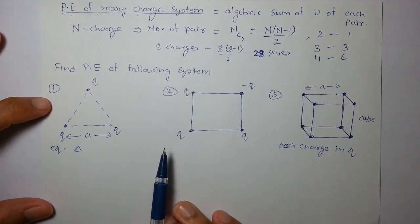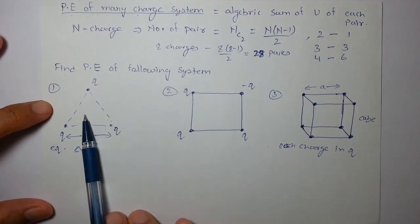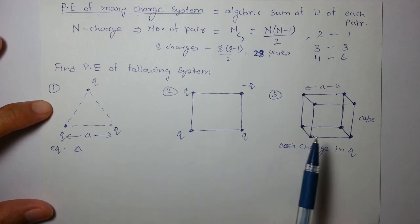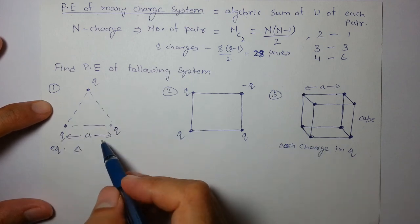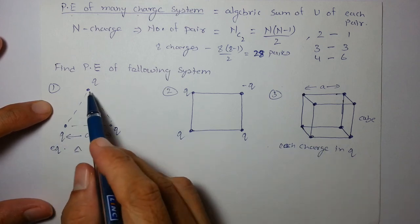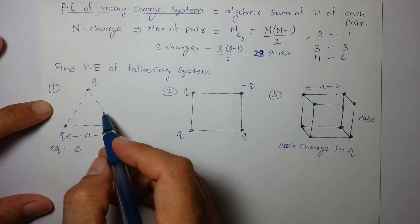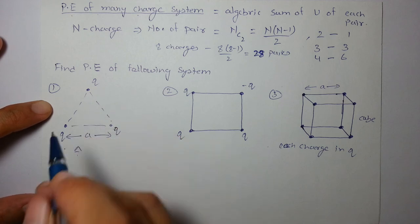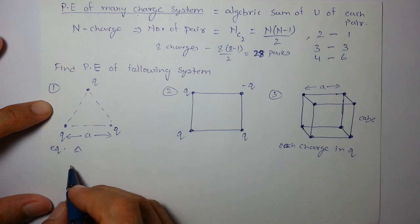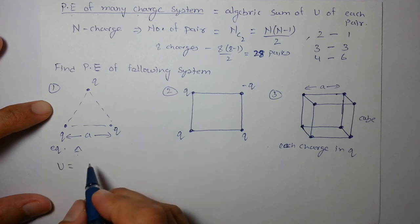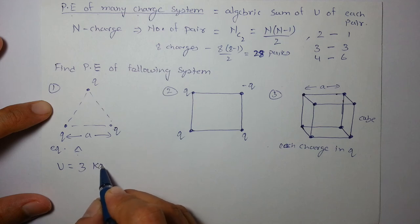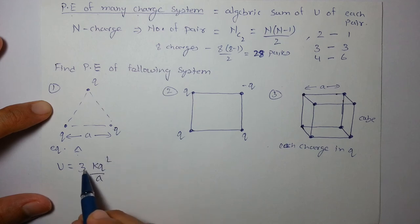Let's solve a few questions on finding the potential energy of a system. For 3 charges placed at the corners of an equilateral triangle with side a, there are 3 pairs, and each pair has distance a. So the total potential energy is 3 × kq²/a.